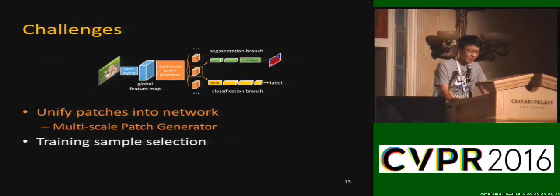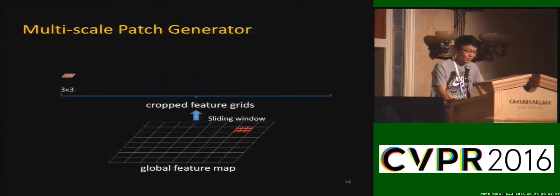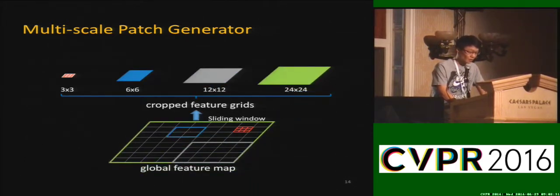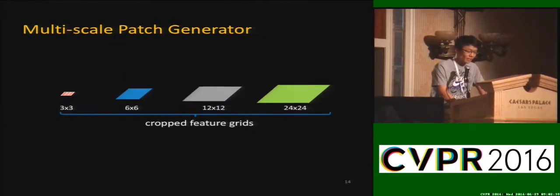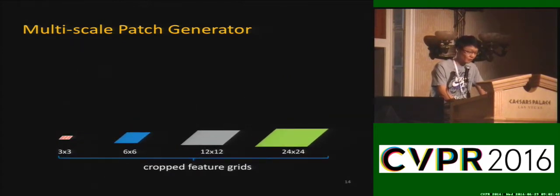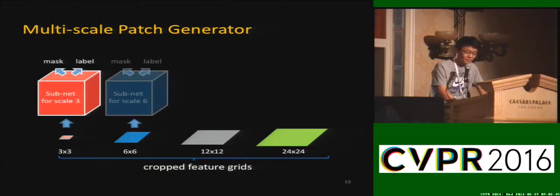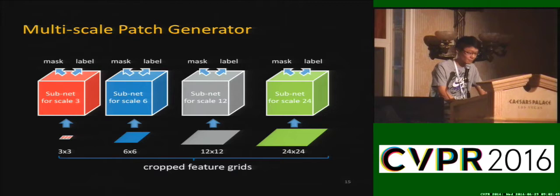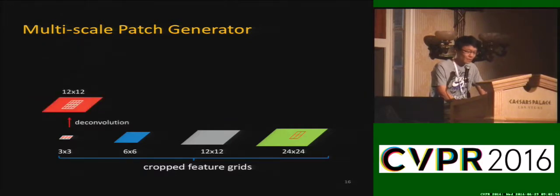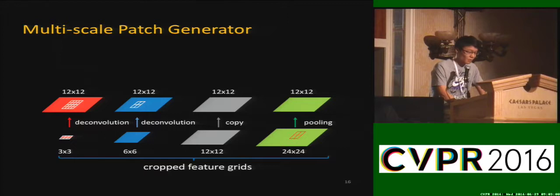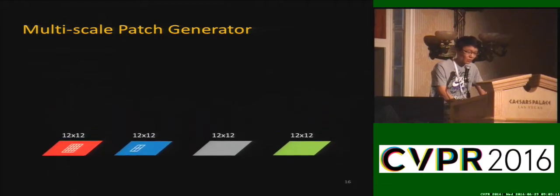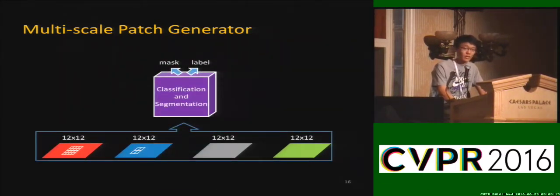The first contribution is to design a multi-scale patch generator. We slide windows on the global feature map to crop feature grids for each patch. Since we have different scales of patches, feature grids are also of different sizes. One intuitive approach is to train different subnetworks for different scales, but this is not optimal due to model size and data splitting. Instead, we adopt a scale alignment module to align feature grids to the same size — using deconvolution layers to up-sample small patch grids and max pooling to down-sample large ones. With this, only one classification branch and one segmentation branch are sufficient to process all patches.